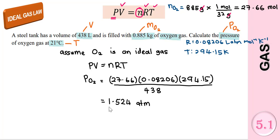We will get the answer: 1.524 atmospheres. Remember, if here we want to find the pressure of the oxygen gas, the moles here, the number of moles here must also be moles of oxygen.